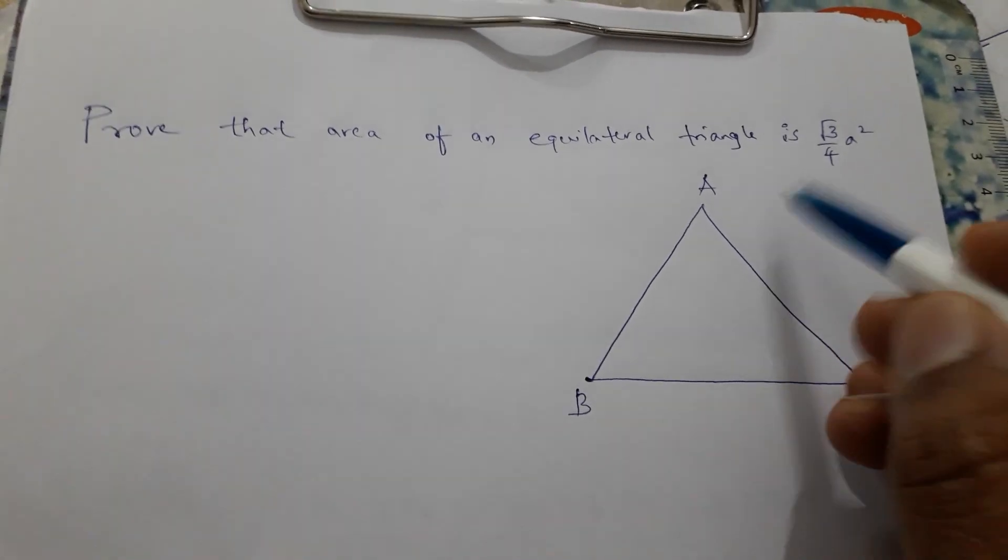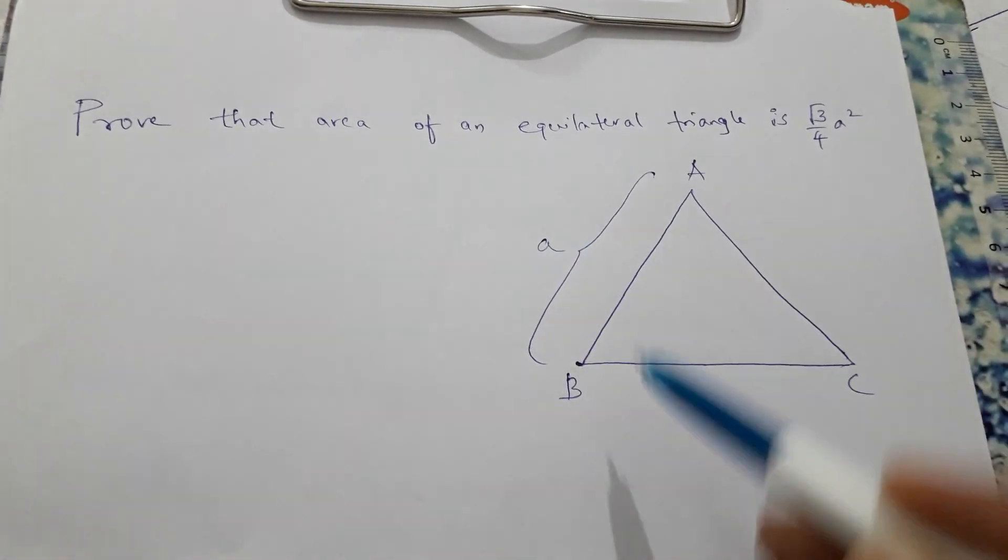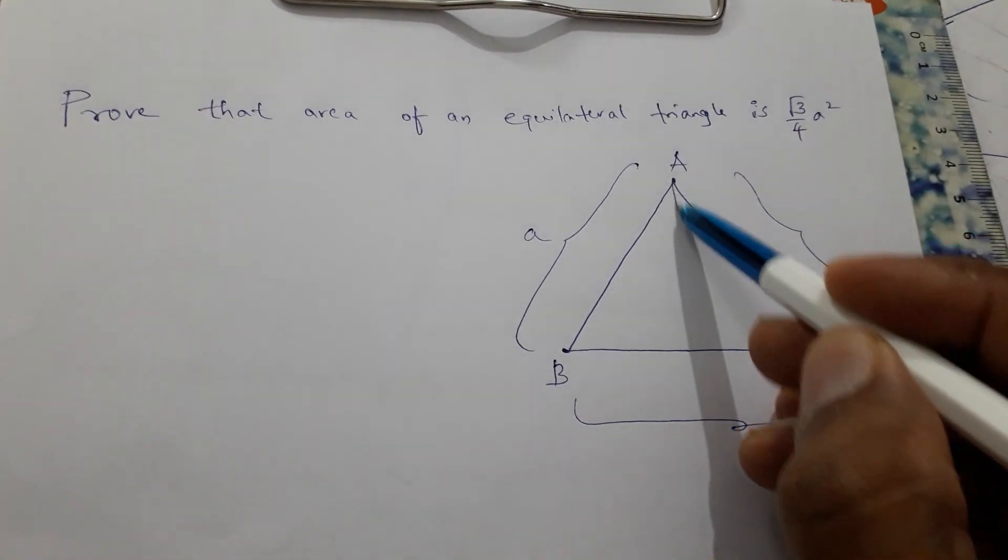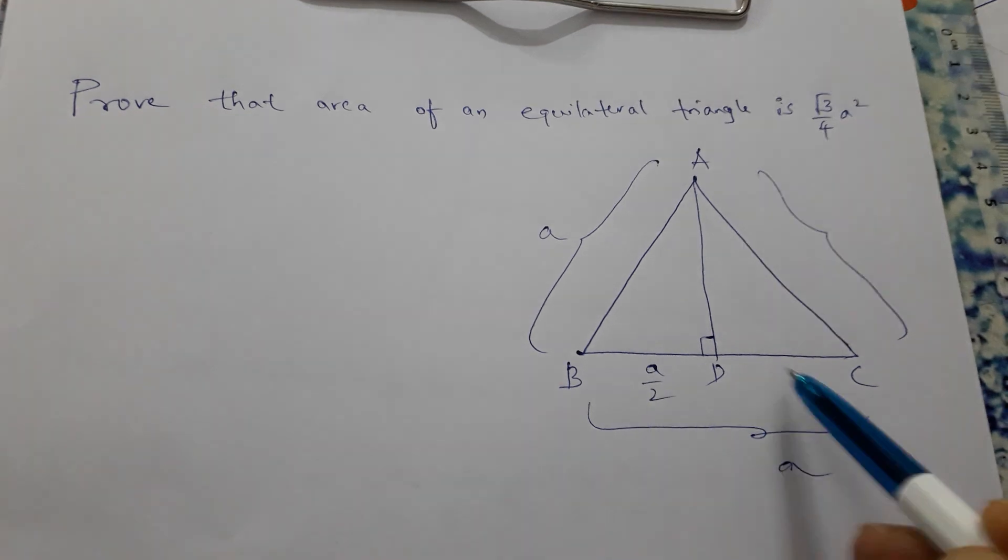Prove that area of an equilateral triangle is root 3 by 4 A squared. Take an equilateral triangle with side A. Draw altitude. As it is an equilateral triangle, it will bisect the side.